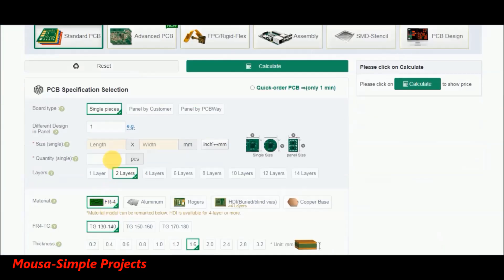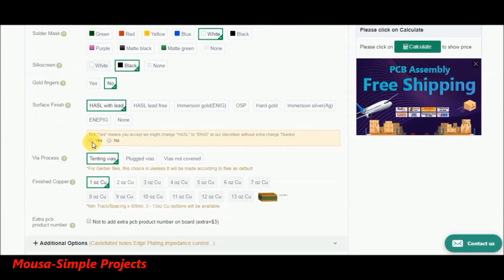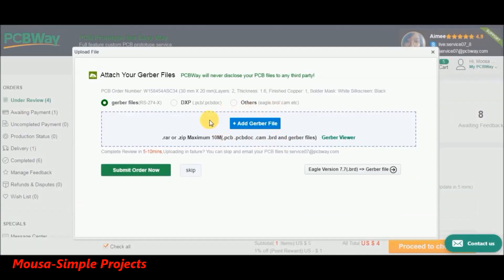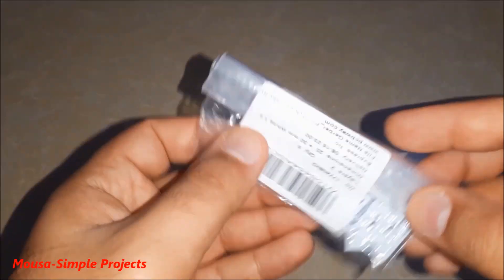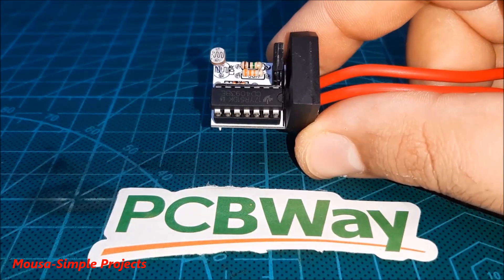Click on quote and order, then insert your PCB size, quantity, and color. Click add to cart, upload your Gerber file, and complete the payment. After about 30 days I received my package, then I soldered the components on the PCB.